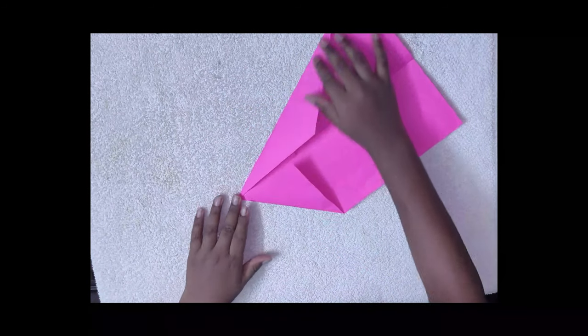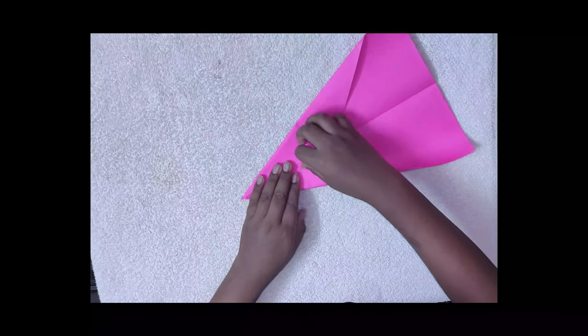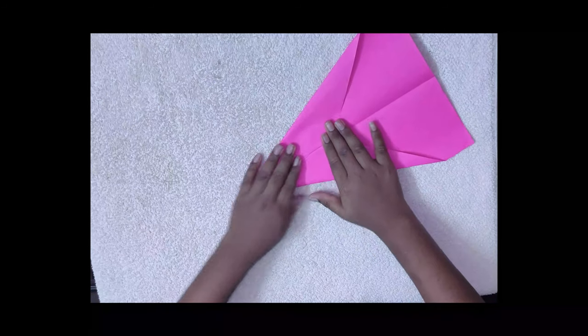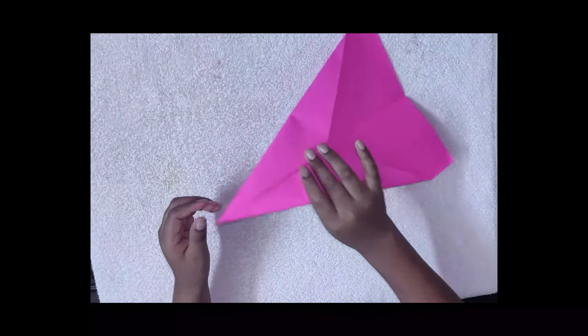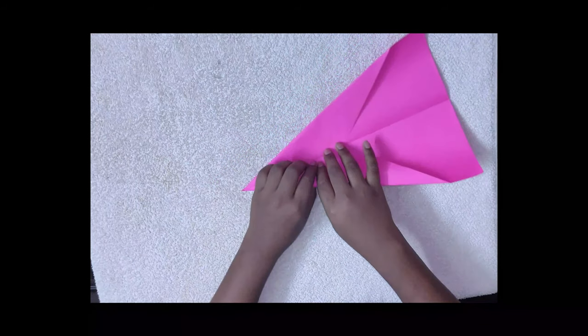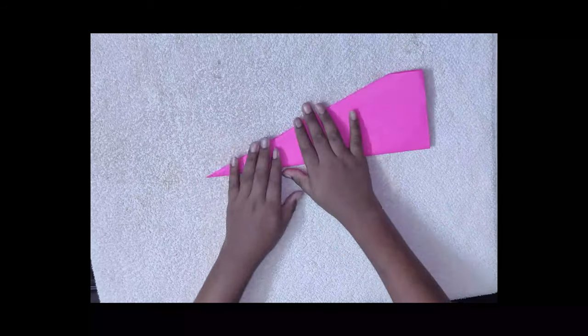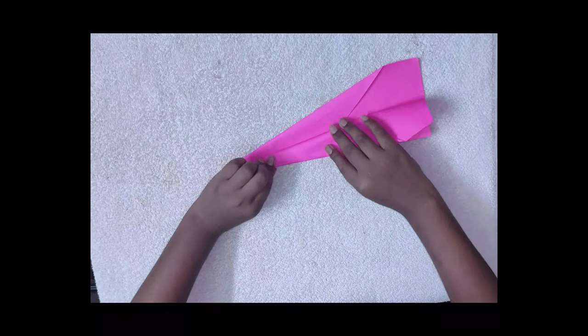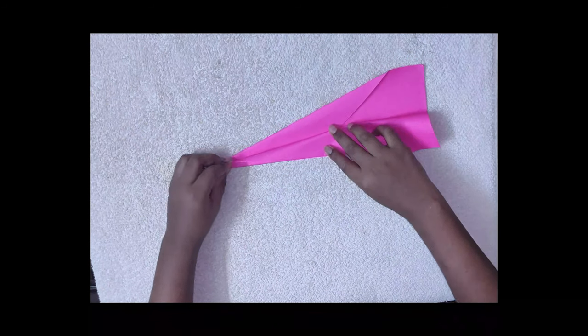See you got this long wing. Now let's do the other side too. You got this very nice paper plane. Now let's do some modifications. Now we'll take an area for throwing the plane, very nice, so it can be like this.